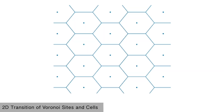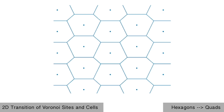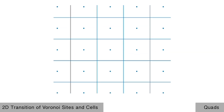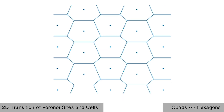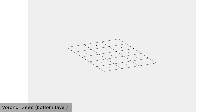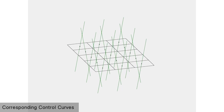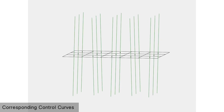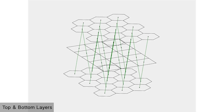We start our exploration with a simple honeycomb pattern, or the regular hexagonal tiling. Now we move alternate columns of hexagons by an amount equal to half the vertical distance between two subsequent cells in opposite directions. We notice that halfway through the process, every hexagon changes to a quadrilateral. We show the middle quad layer, and then the corresponding control curves for each cell — this is the path through which the cell is lofted upon. Next, we show the top and bottom layers.